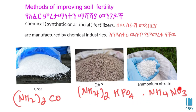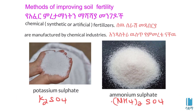We'll need to make a synthetic fertilizer in this way. Potassium sulfate: potassium, sulfur, oxygen. Ammonium sulfate: nitrogen, hydrogen, sulfur, oxygen.